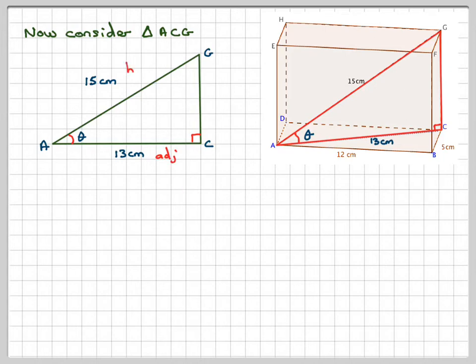Labelling the sides adjacent, that's next to the angle, hypotenuse, the longest side. Looking at SOHCAHTOA, I've got adjacent hypotenuse and angle, so obviously I'm going to use this one, CAH.